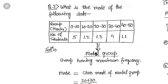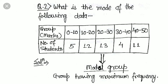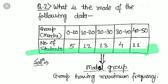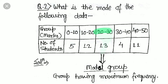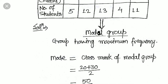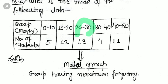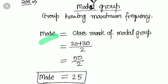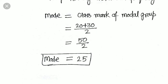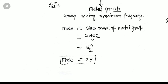Now see another example with a grouped frequency table. Again, look at the frequencies. The highest frequency is 13, so that group is called the modal group — the group having the highest frequency. The mode lies in this group. The mode equals the class mark of the modal group, and the class mark is calculated as (lower limit + upper limit) / 2. So mode = (20 + 30) / 2 = 50 / 2 = 25.